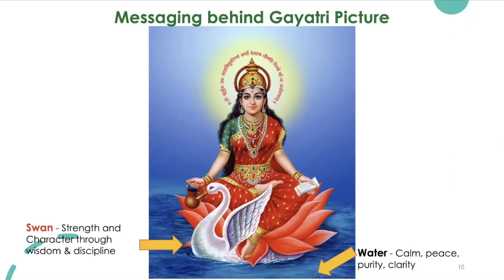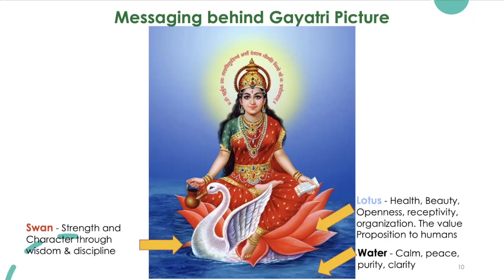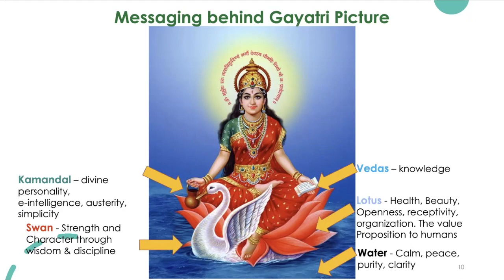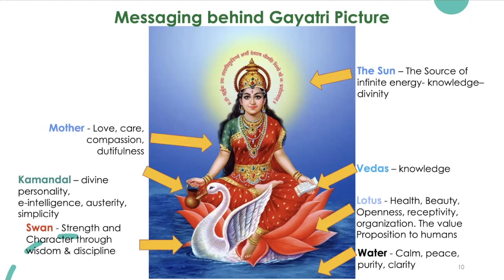Swan means strength and character through wisdom and discipline. Lotus means health, beauty, openness, receptivity, and organization. Vedas means knowledge. Kamandal means divine personality, intelligence, austerity, and simplicity. The sun is described as the source of infinite energy, knowledge, and divinity.